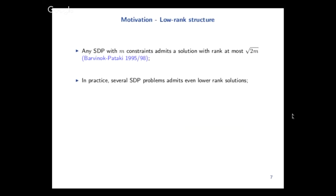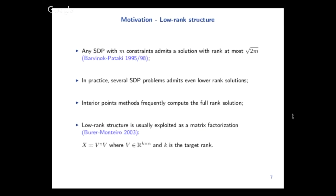You can see that in practice, several SDPs admit a solution that has a lower rank than this—this is a loose bound. Interior point methods often return the full rank solution and not the low-rank solution that we're interested in. Usually people try to exploit this low-rank structure by using unconventional methods like factorizing your decision variables, but then it turns out your problem is not convex anymore. The whole thing about trying to solve a convex problem is that you have this guarantee, and if you do this you kind of lose the guarantee, so it's kind of a bummer.